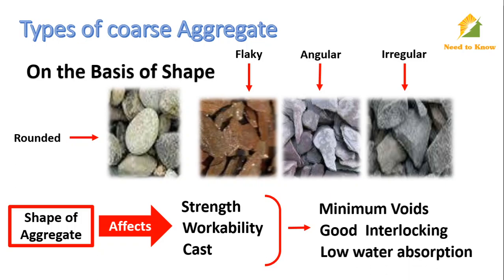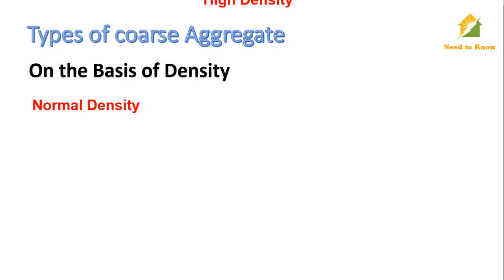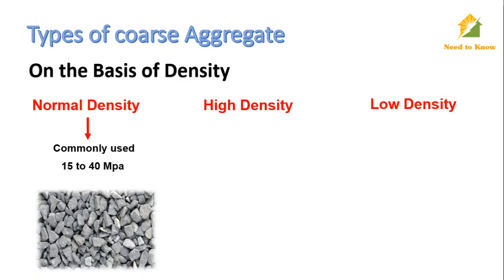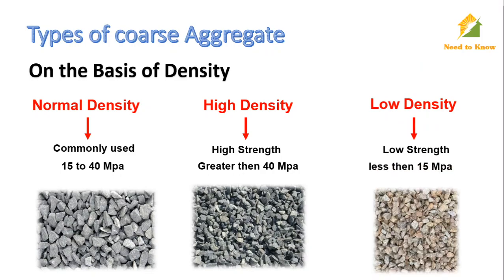For good workability, low water absorption is required. On the basis of aggregate density, coarse aggregates are classified as normal density, high density, and low density. Normal density aggregate is most commonly used, giving crushing strength between 15 to 40 megapascal. High density aggregates are used for high strength, usually greater than 40 megapascal. Low density aggregate is used where low strength is required, usually below 15 megapascal.